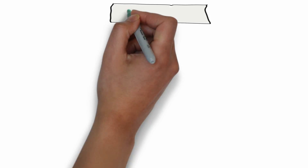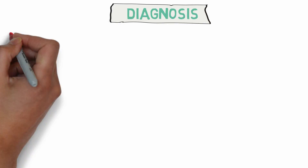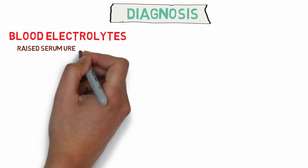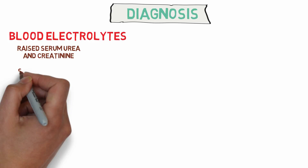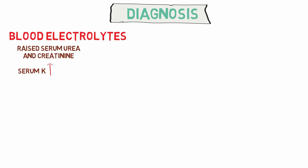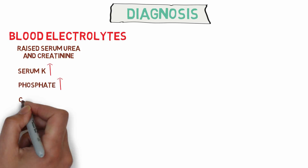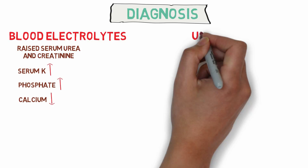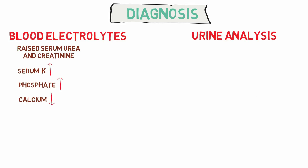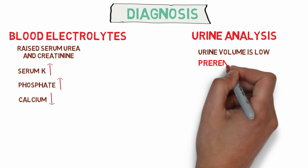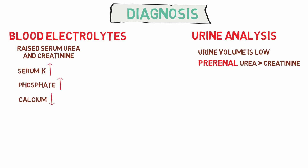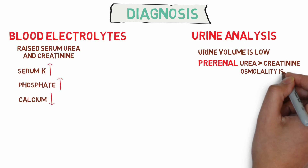Regarding diagnosis of the type of ARF, blood electrolyte profile is very important, showing raised serum urea and creatinine. Various electrolyte abnormalities are present, like raised serum potassium, raised serum phosphate, and decreased serum calcium. Urine analysis shows low urine volume. In pre-renal ARF, urine urea concentration is greater compared to creatinine, and urine osmolality is raised.